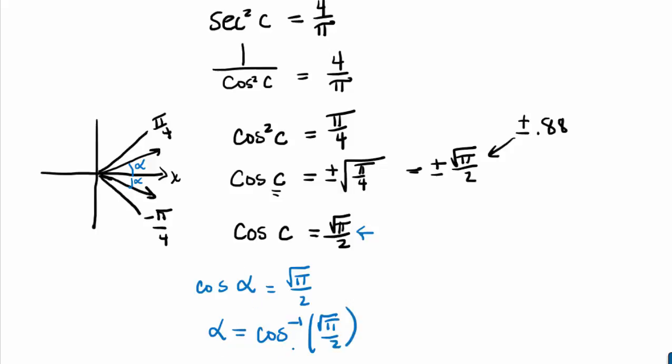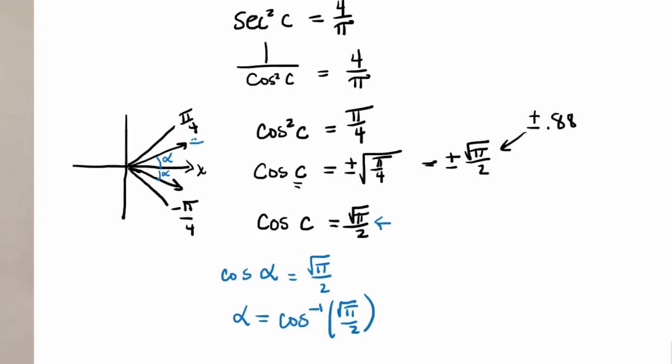So we know that our reference angle is the inverse cosine of square root of pi over 2. And you might want to check that you get an angle that's less than 45 degrees, less than pi over 4. And in fact, you do. But we don't want an inexact solution. I'm not looking to round off. So I'm actually going to leave this as my angle. But I wanted to solve cosine of c equals square root of pi over 2 from negative pi over 4 up to pi over 4. So I need to include both of these.